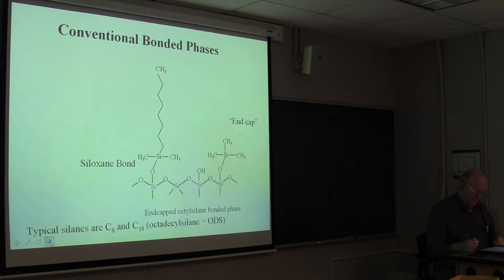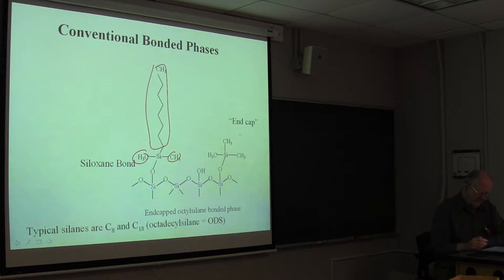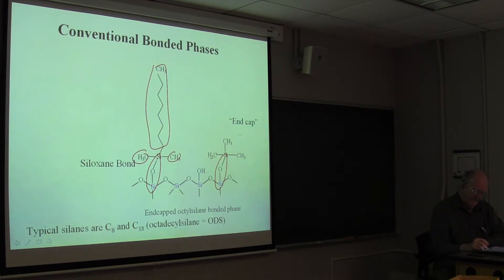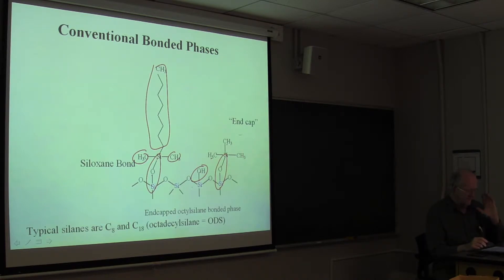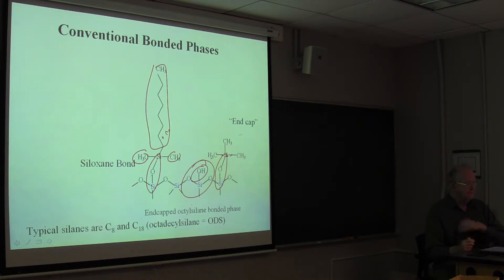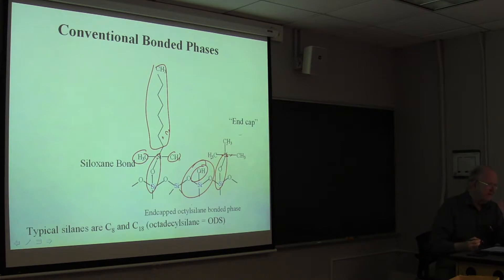Here's a rendering of what a C8 end-capped phase looks like: there's the dimethyloctyl group with a single Si–O–Si bond to the surface, and here are the end-capping trimethyl groups. But it's still possible to have silanols — they can bump into adjacent groups and just can't get covered. Even on a very highly silanized phase, you'll get a little more than four micromoles of bonded groups per gram, but you started with eight micromoles of silanols, so residual silanols are still there. If your analyte can get close to one, it will interact with it and that impacts selectivity and retention.